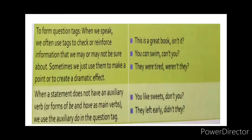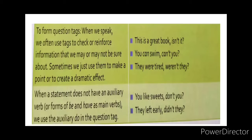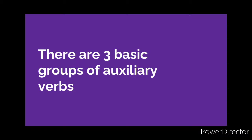Other uses of auxiliary verbs include: making sentences in past perfect tense, making sentences in past continuous tense, making sentences in passive form, expressing an obligation — meaning you must do something — and forming questions. We have divided auxiliary verbs into three groups.